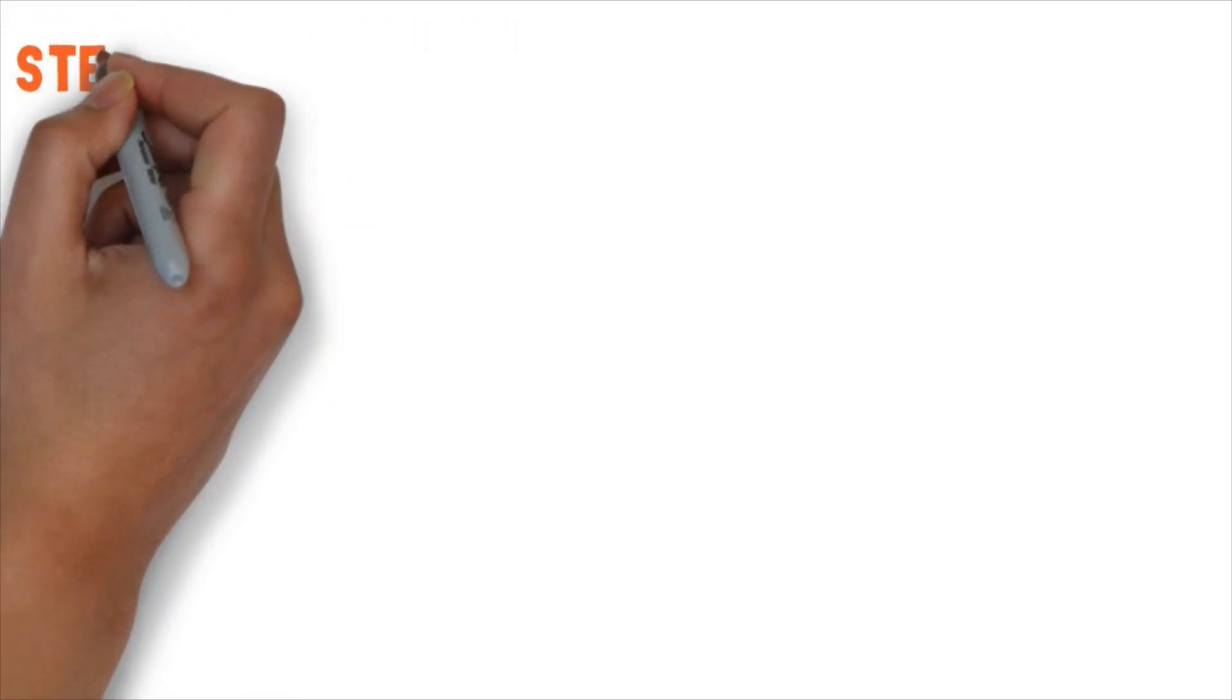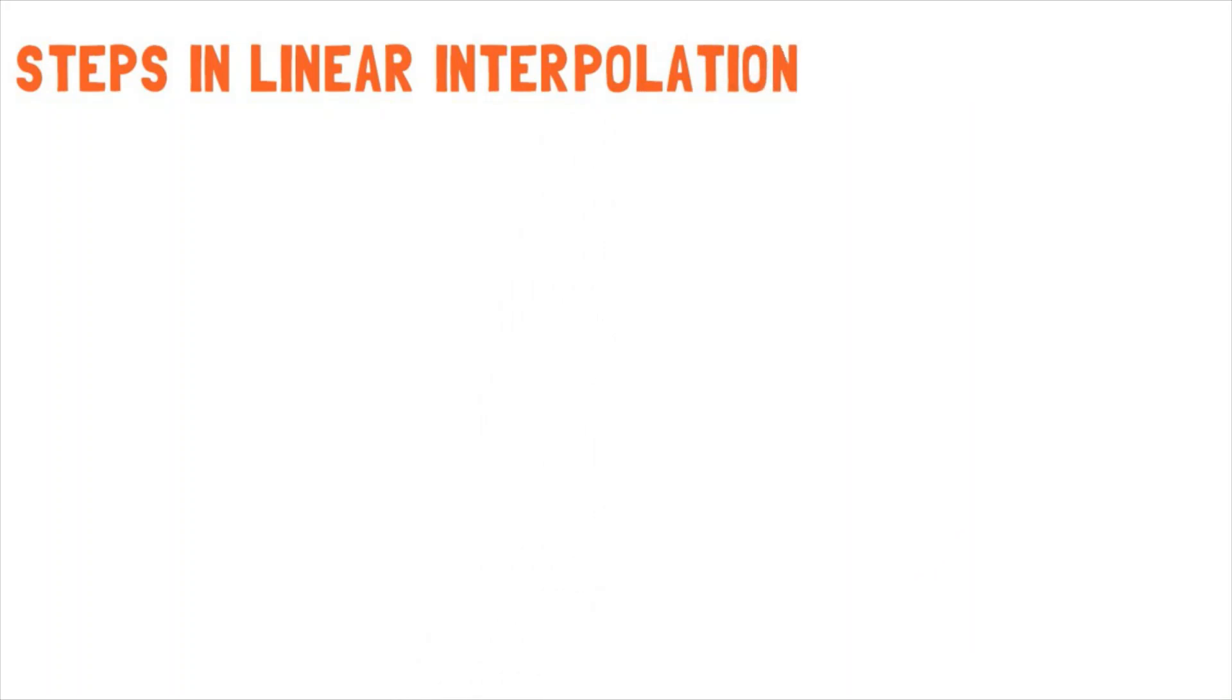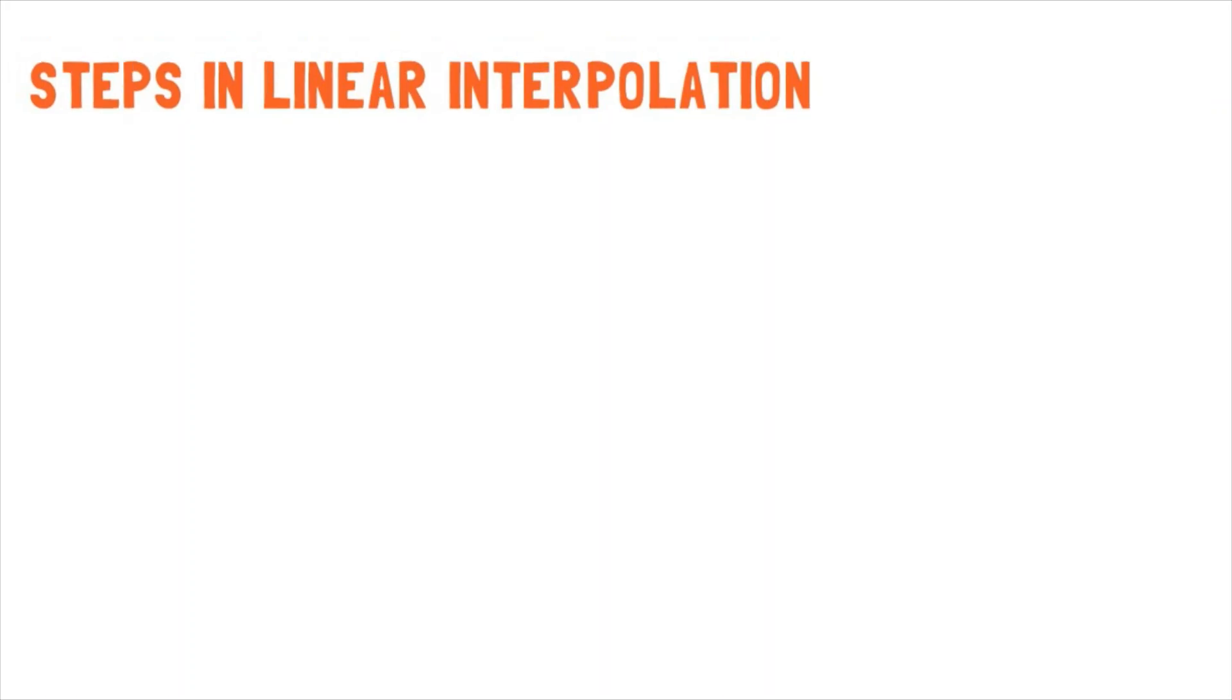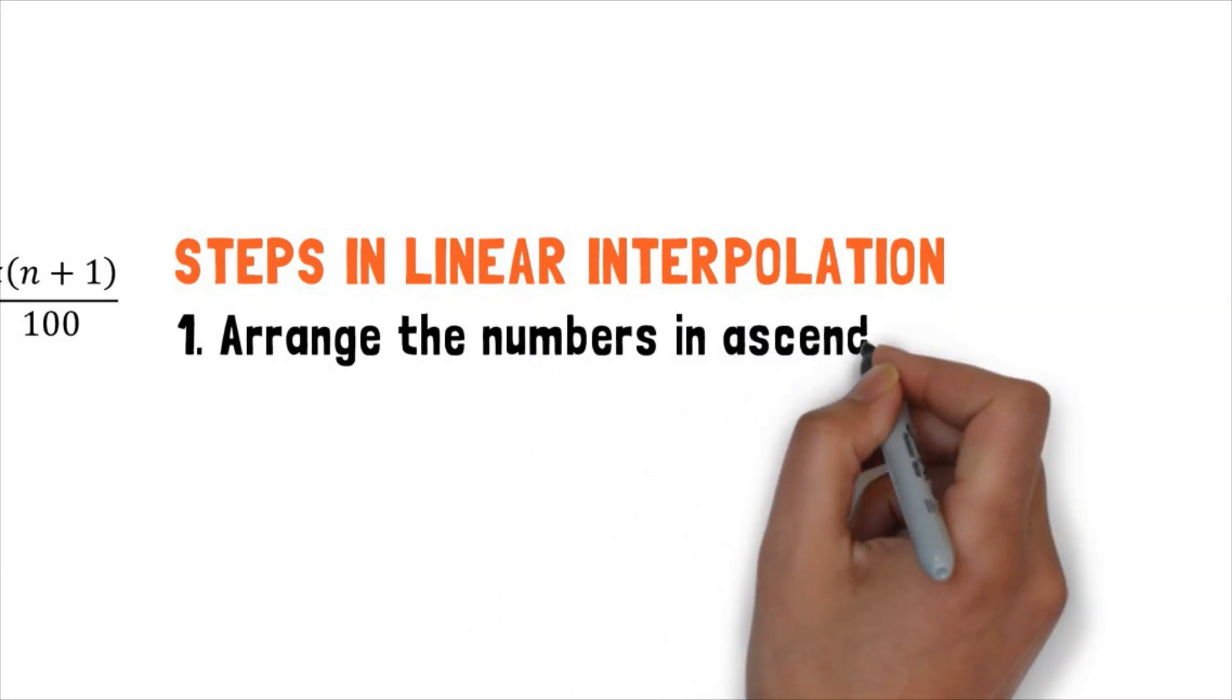Just like in the Mendenhall method, we also have steps to follow in solving using linear interpolation. Take note that linear interpolation is another method of finding the measures of position. For step 1, we need to arrange the numbers in ascending order.